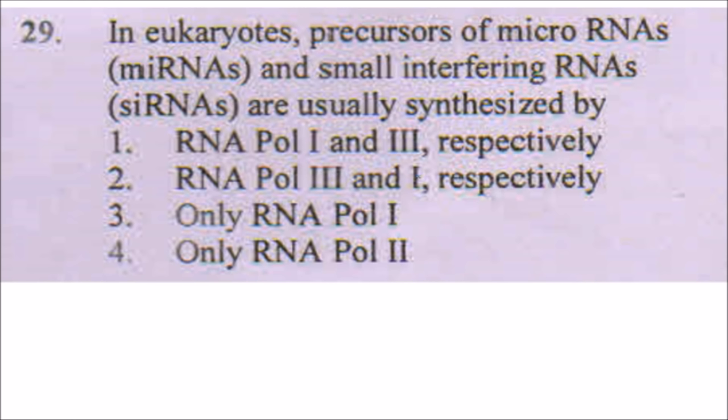The next question is: in eukaryotes, precursors of microRNAs (miRNA) and small interfering RNAs are synthesized by which class of RNA polymerase? We know that only RNA Polymerase II is the one which can synthesize messenger RNA in eukaryotes, and miRNA precursors are transcribed by RNA Pol II.